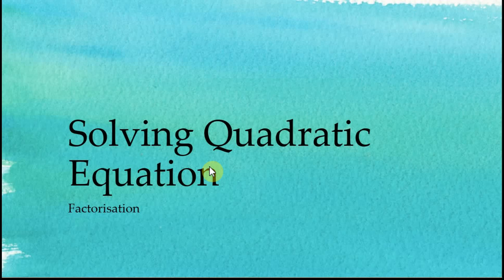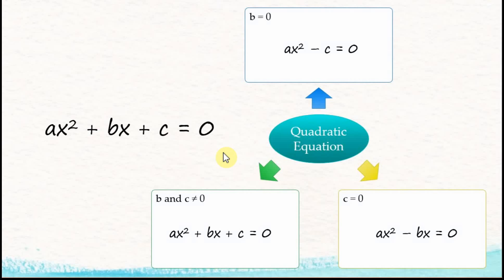Solving quadratic equation factorizations. In a previous video, we learned that to solve quadratic equations, we divide them into three classes: the first type where b equals zero, the second class where c equals zero, and the third where b and c are not equal to zero. We learned how to solve the first two classes, so now we move on to the third class.